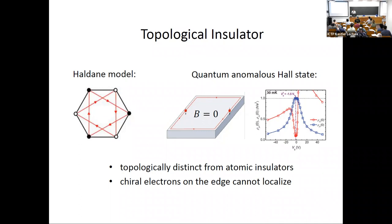Despite the bulk having an insulating gap, this topological state is fundamentally different from an atomic insulator. One way to see this is that chiral electrons on the edge cannot be localized — very different from the case of a Mott insulator, where electrons are localized at sites both in the bulk and on the boundary. Topological states cannot be fully localized everywhere.